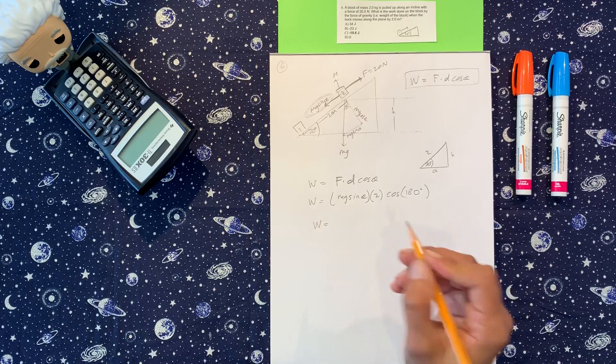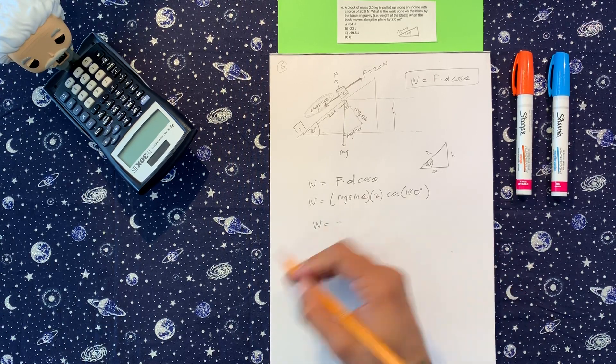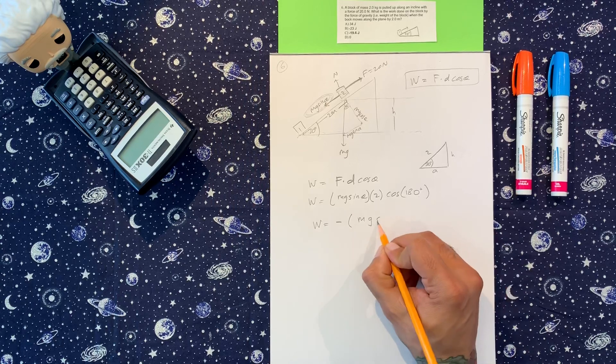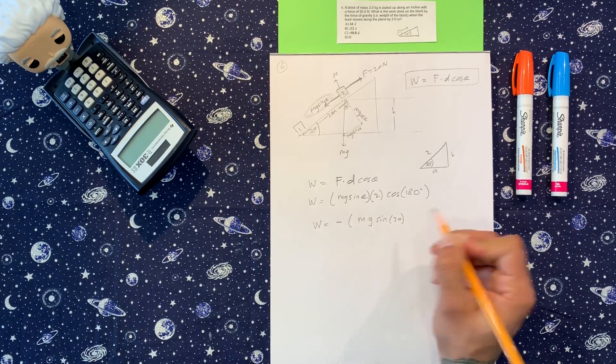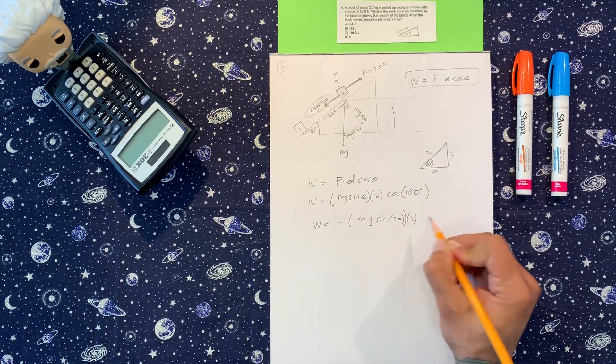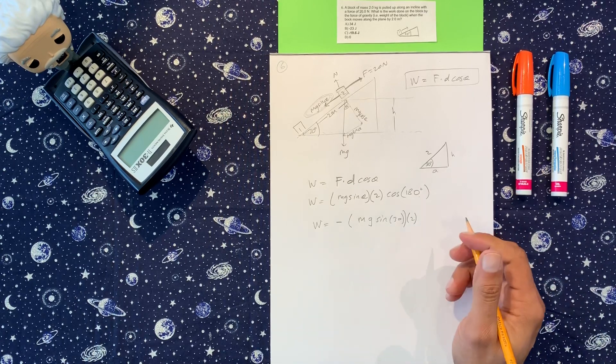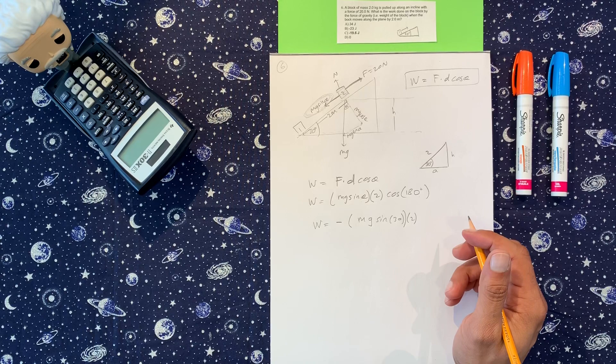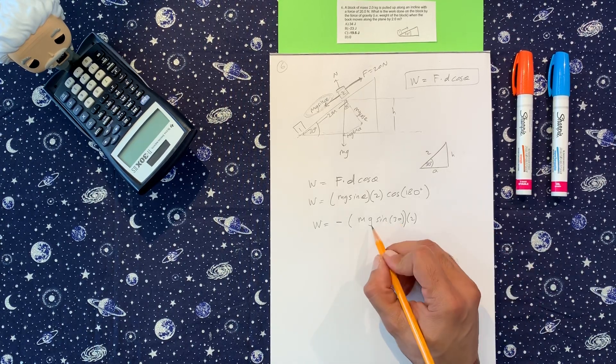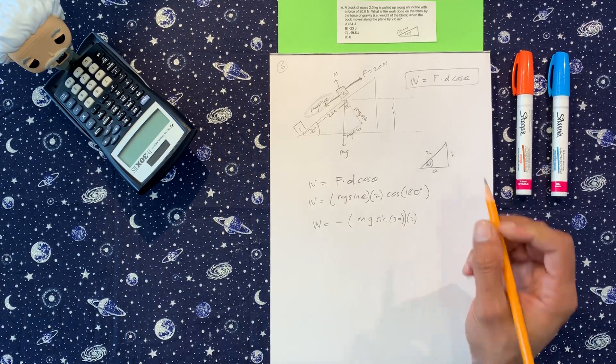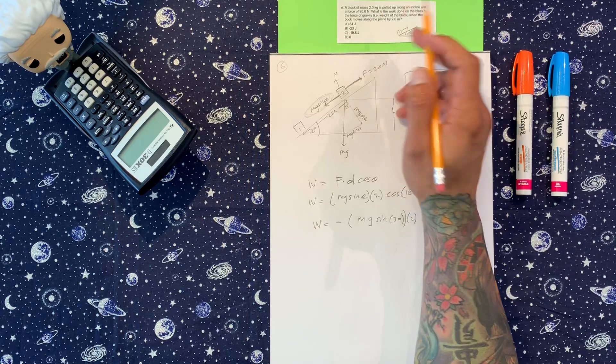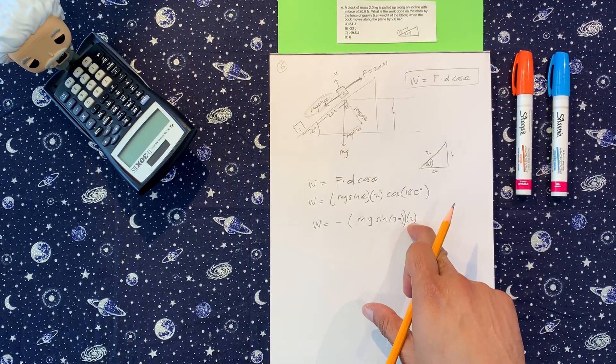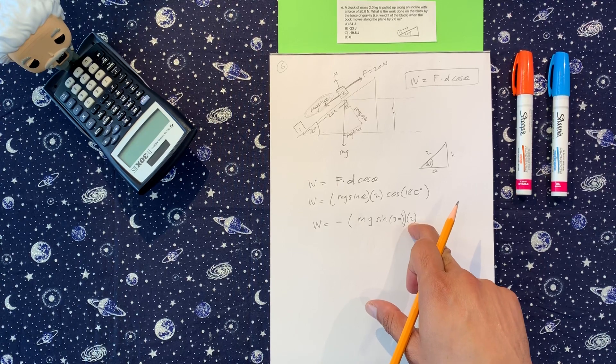So then we have negative, I'm going to put the negative out front. We got mass, gravity, sine of 30, and then everything times 2. Right? We have the mass, we have gravity that was given to us. I mean, the mass was given to us. Gravity, we know. Sine of 30, and displacement is 2. Okay? So let's see.